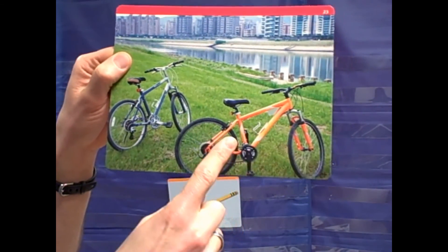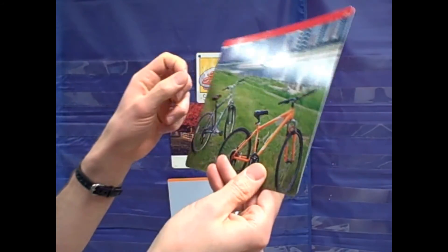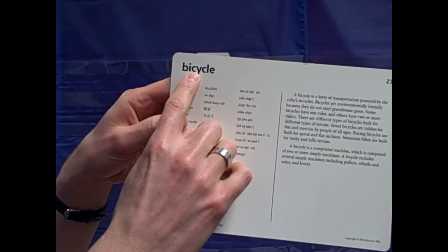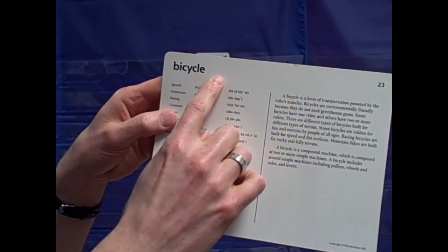This is a picture of a bicycle. Bicycle has the spelling C-Y in it. C-Y spells ssss, bicycle.